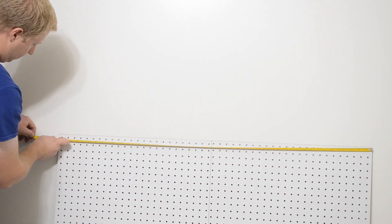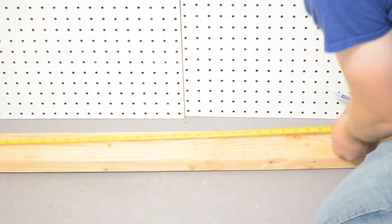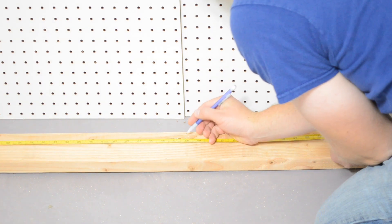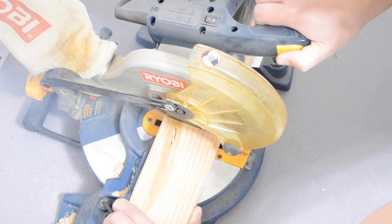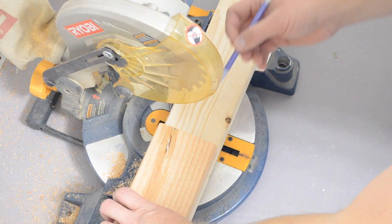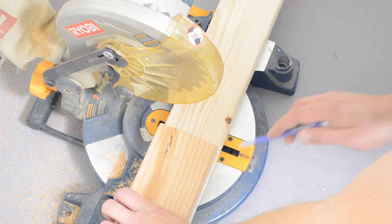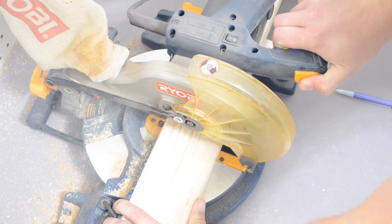I started by measuring the exact dimensions of my pegboard, and I cut two lengths of two by four to match the exact width of my pegboard. Two by four is complete overkill for this project, and you could get away with one by two if you wanted, but I had some lying around, so that's what I used.